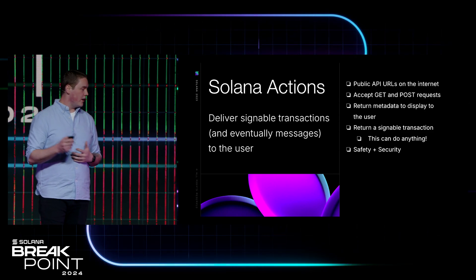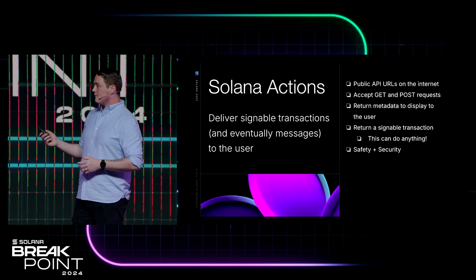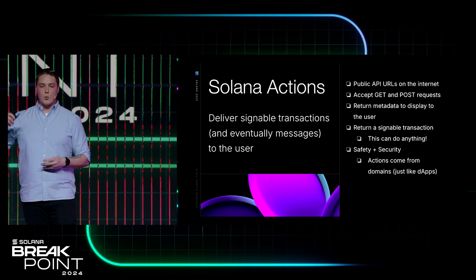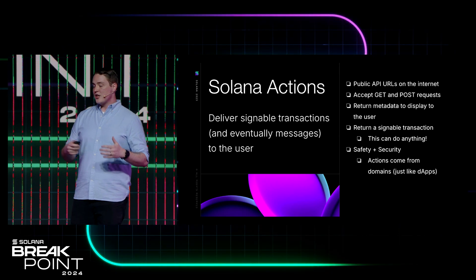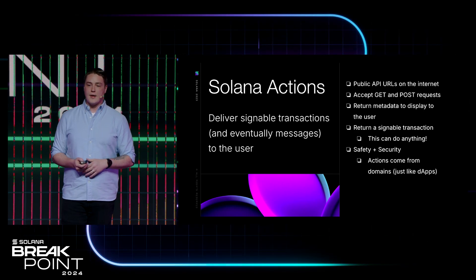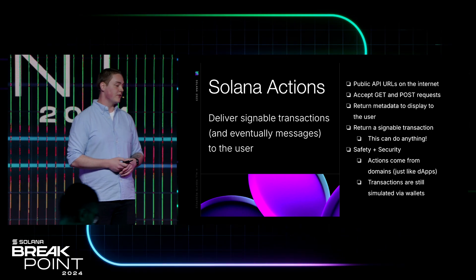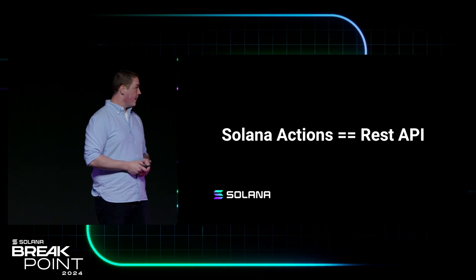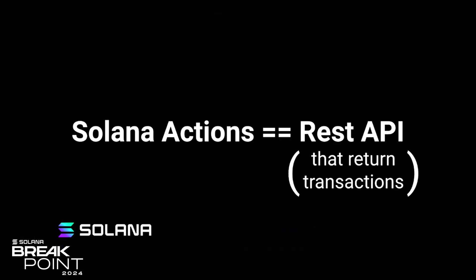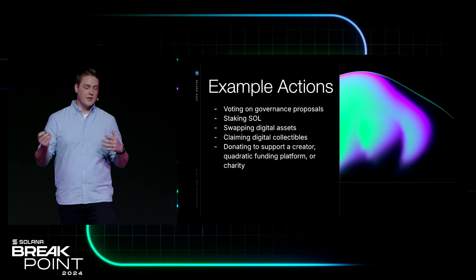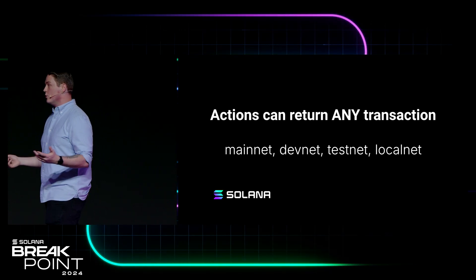These transactions can really do anything. Anything you can do with a Solana transaction, you can do with a Blink — because they're just Solana transactions. The last thing here is safety and security. When Blinks launched, a lot of people worried about bad things happening — not so much. Actions come from domains, just like you connect to any other dApp across the internet. Your wallet has user security and safety features — it checks the domain, sees if it's a bad one, and handles that. Wallets are also doing transaction simulation, with things like Blowfish and Blockade. They're just REST APIs that return transactions. Some examples of what you can do: vote on a governance proposal, stake SOL (native or liquid), swap assets, claim collectibles — anything you can possibly do with a Solana transaction, you can do with Blinks and Actions. Mainnet, devnet, testnet, even localnet.